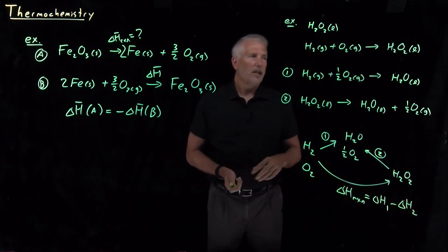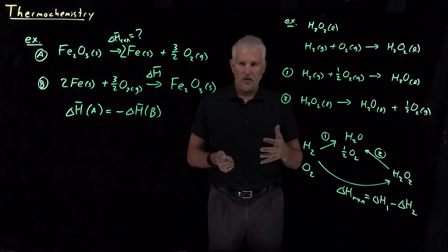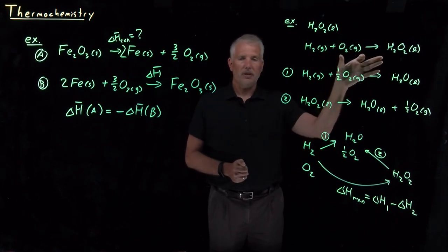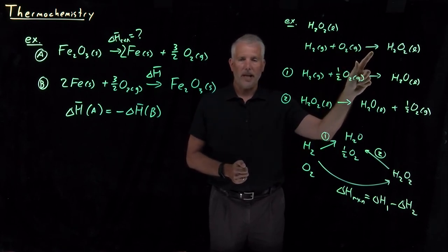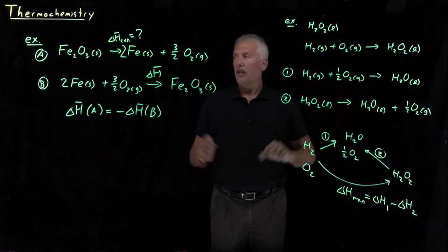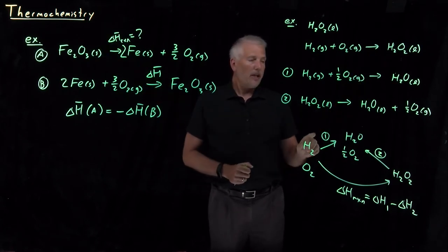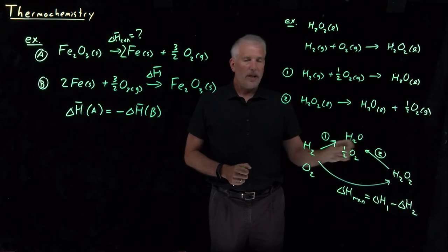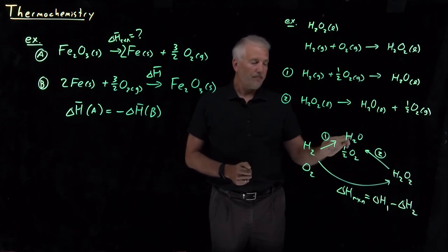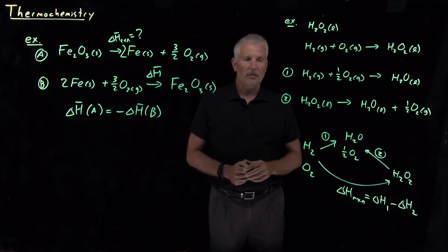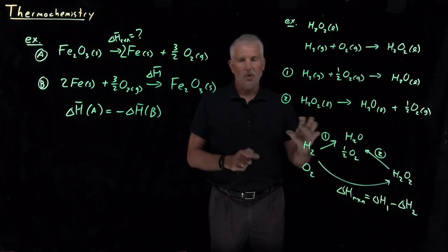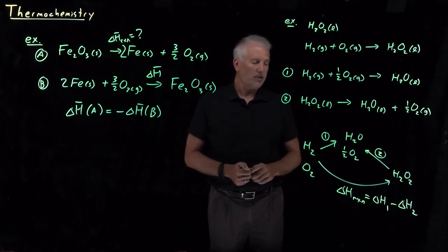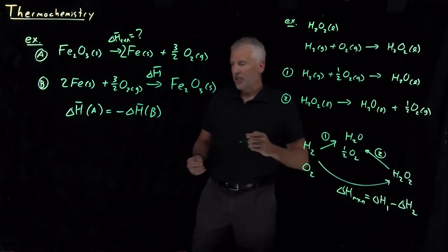Very often, if there's a chemical reaction that we can't literally perform in the laboratory, we can still find out something about the thermodynamics of that reaction, the thermochemistry, by breaking it down into reactions that we can either measure the properties of, or themselves can be broken down in other ways to measure the properties of. So the key observation here is something called Hess's law.